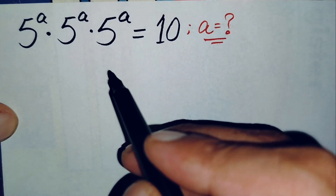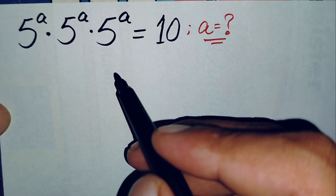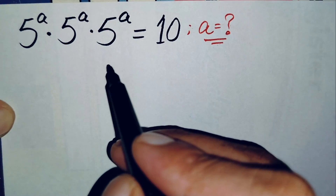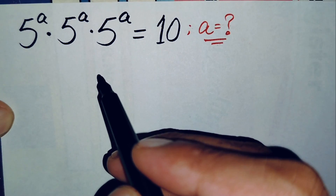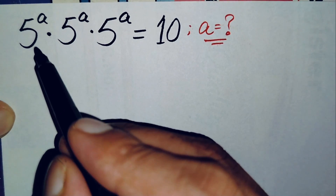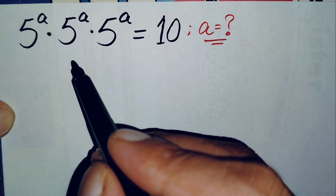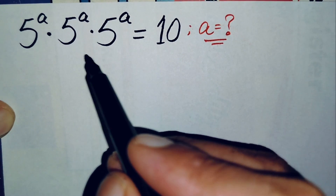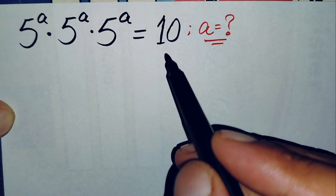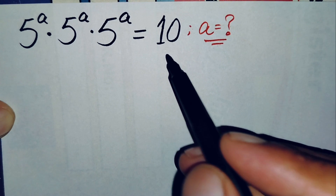Hello everyone, welcome to Math Explorer. We will solve this nice exponential equation: 5 raised to power a, times 5 raised to power a, times 5 raised to power a, is equal to 10.